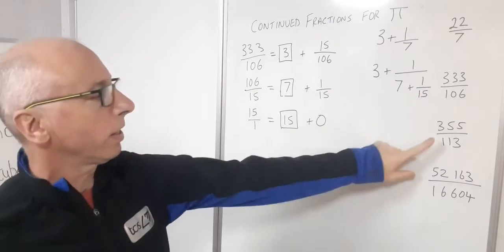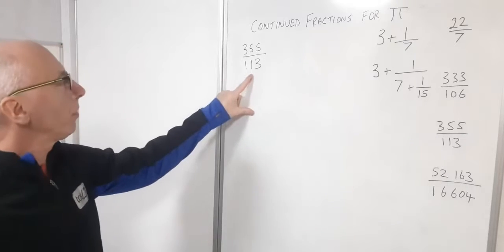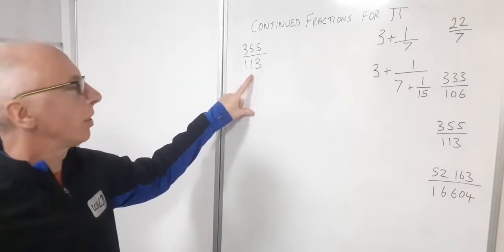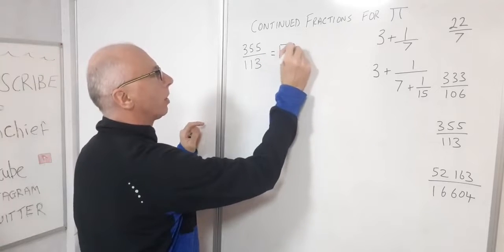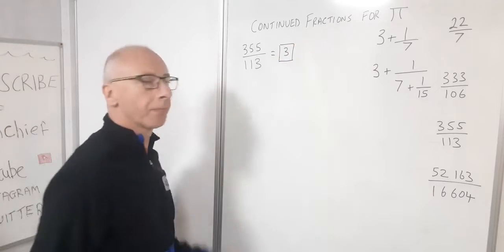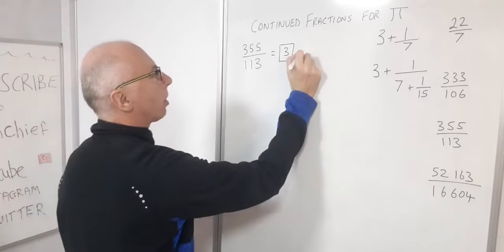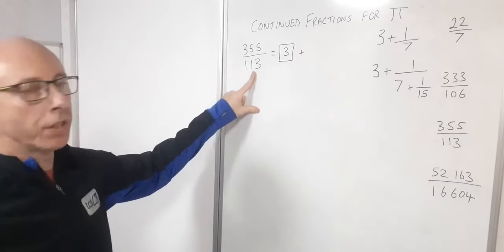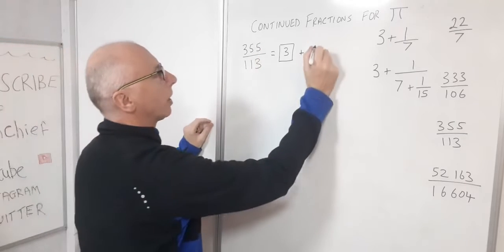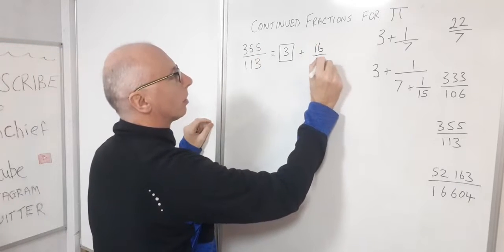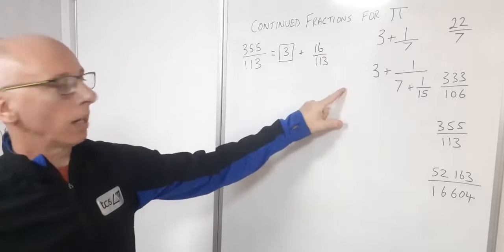Now let's try this one. 355 divided by 113. So let's go straight in. We know our integer is going to be 3. Now we need our remainder. 3 times 113 is 339, so therefore we've got 16 left over. That's that line complete.